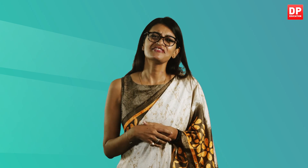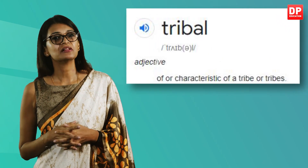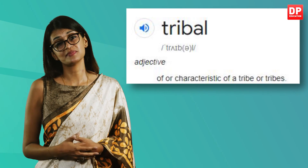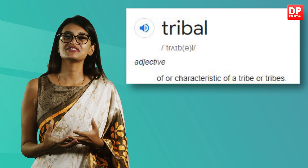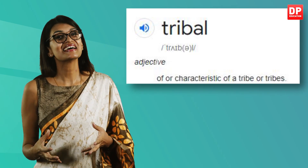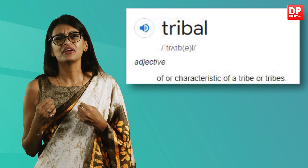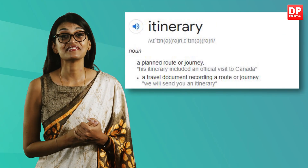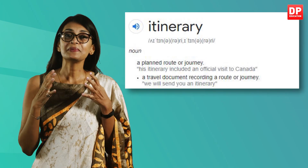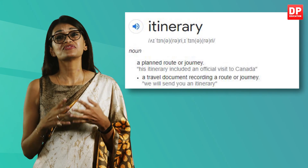Some vocabulary may have been difficult. 'Fascinating' means intriguing or very interesting. 'Tribal' means of or characteristic of a tribe. Tribes are a social division in a traditional society consisting of families or communities linked by social, economic, religious, or blood ties, with a common culture and dialect, typically having a recognized leader. An 'itinerary' is a planned route or journey — a travel document recording a route. You may have seen itineraries when teachers plan field trips to historical sites.